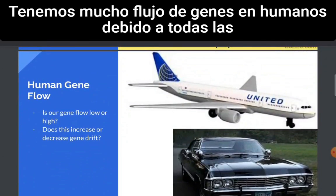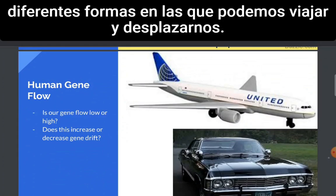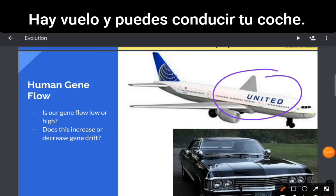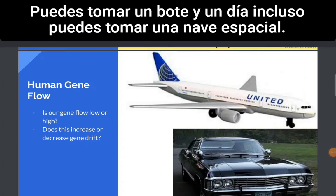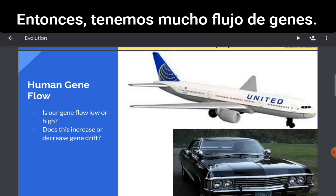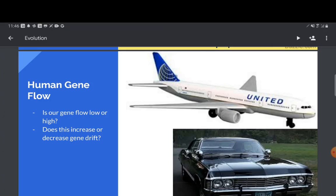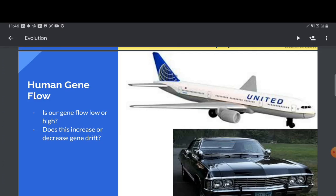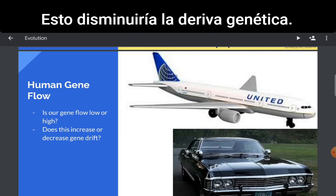We have a lot of gene flow in humans because of all the different ways that we can travel and get around — there is flying, you can drive your car, you can take a train, you can take a boat, and one day you can even take a spaceship. And so we have a lot of gene flow. So does this increase or decrease genetic drift? This would decrease genetic drift.